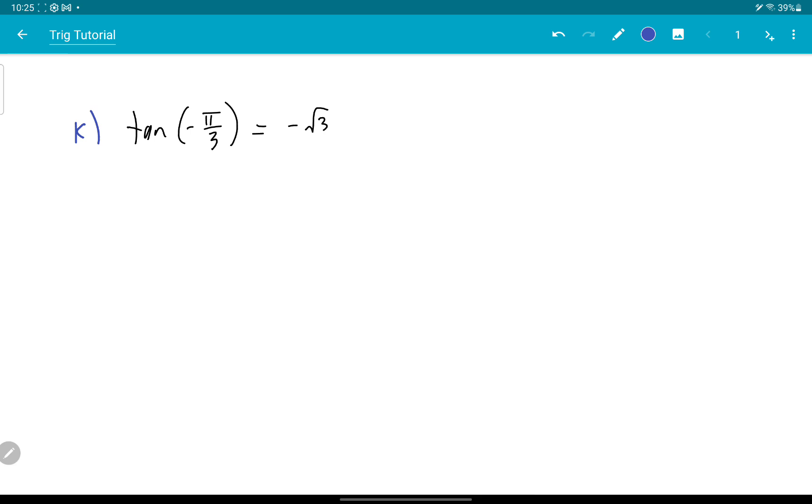Tan of negative π over 3. Well, let's see. Negative π over 3 is down here. Negative π over 3, okay.